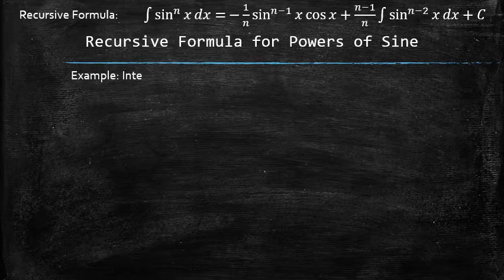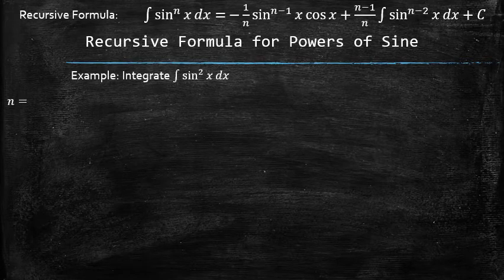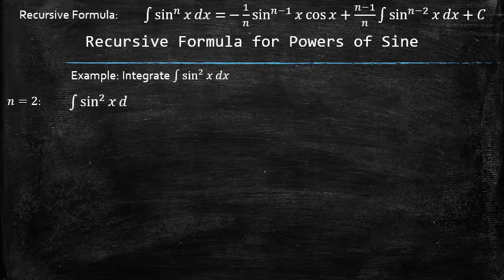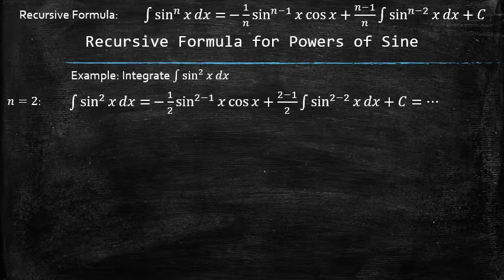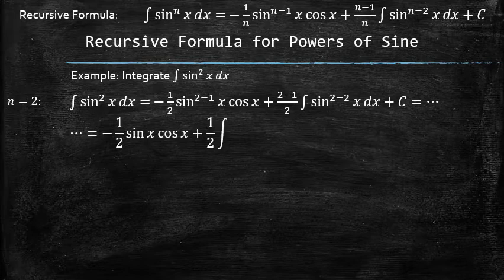Let's use the recursive formula to find the integral of the square of sine. To apply the formula, we set n equals 2 and replace every appearance of n in the formula with 2. After simplifying the expression, we now have to find the integral of sine raised to the power 1.